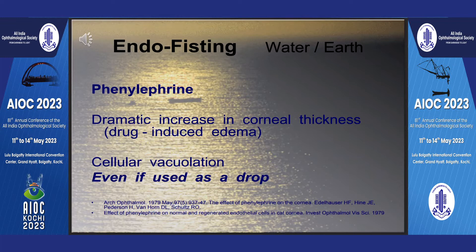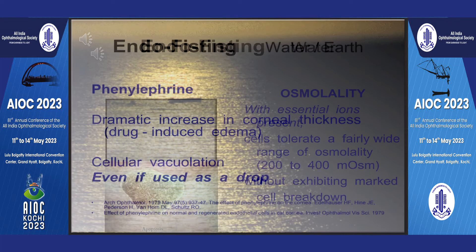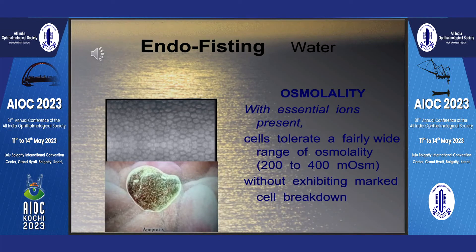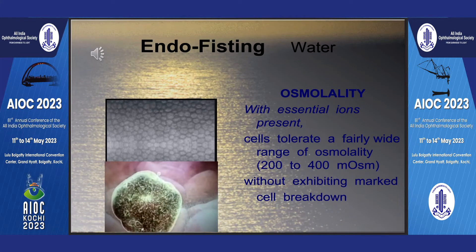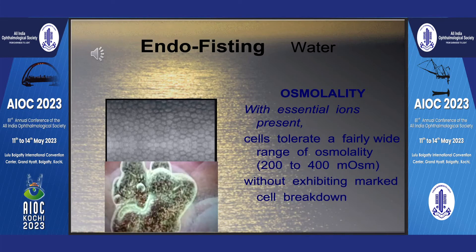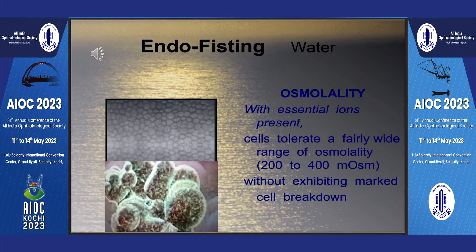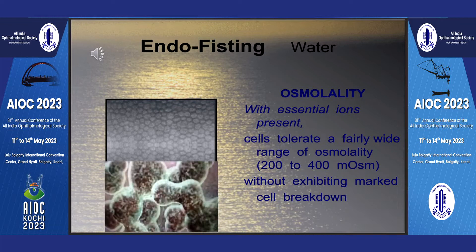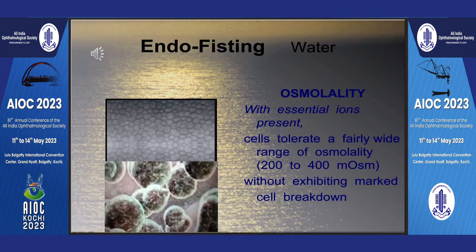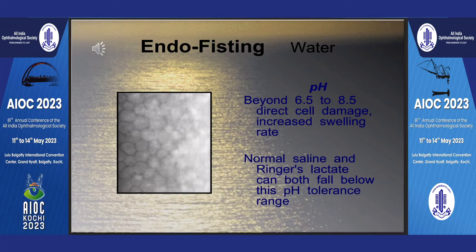The additives in the irrigating fluid also matter a lot. Phenylephrine can cause a dramatic increase in corneal thickness — drug-induced edema — and cellular vacuolation takes place even if it is used as a drop. Osmolality also plays a very important role. With essential ions present in the irrigating fluid, cells tolerate a wide range of osmolality from 200 to 400 mOsmol without marked cell breakdown. Beyond pH of 6.5 to 8.5, direct cell damage and increased swelling rate takes place.